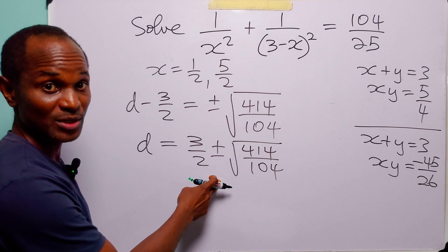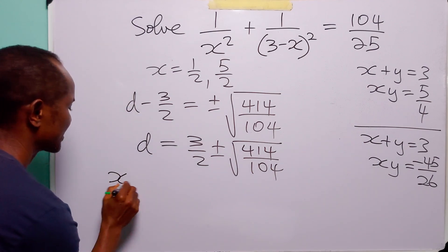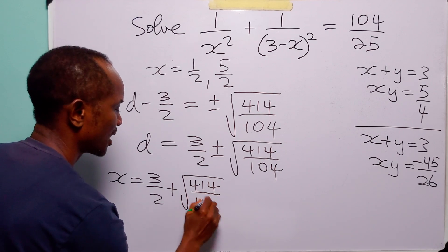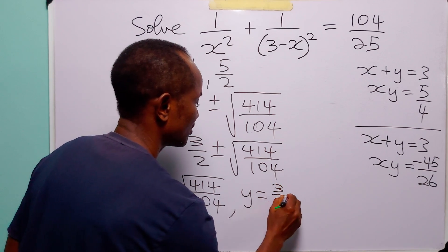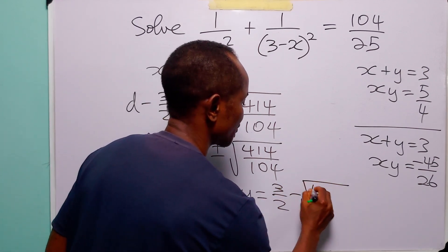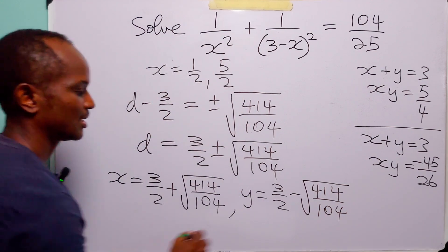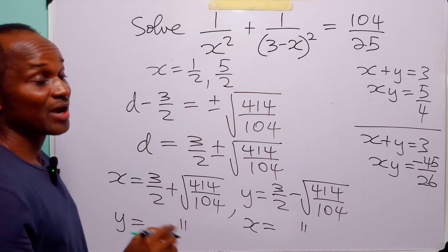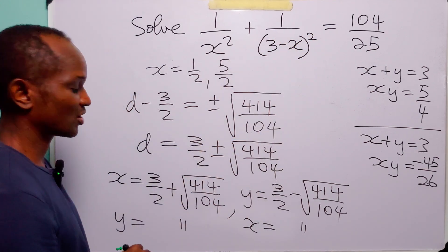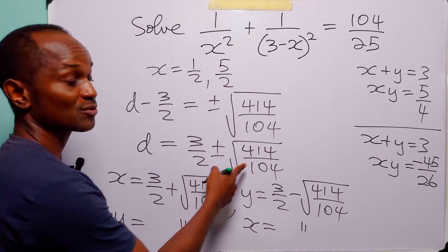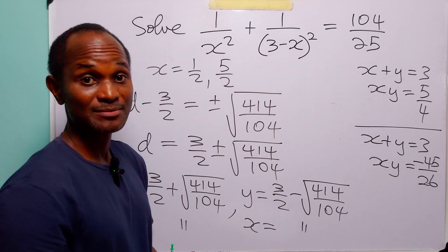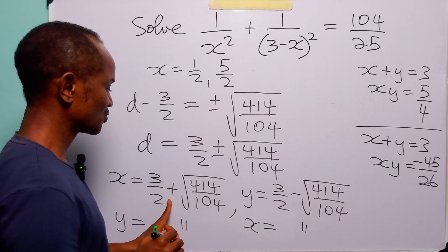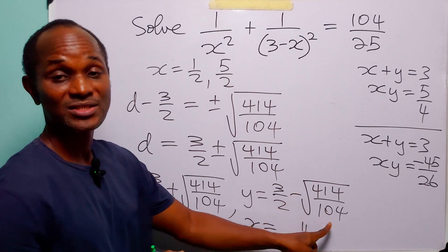We have found the roots of the second quadratic, so when x equals 3 over 2 plus root of 414 over 104, y equals 3 over 2 minus root of 414 over 104, and vice versa. So we have found the final two values of x that satisfy the original equation: 3 over 2 plus or minus the square root of 414 over 104. Ultimately, we have four values of x: 1 over 2, 5 over 2, 3 over 2 plus the square root of 414 over 104, and 3 over 2 minus the square root of 414 over 104.